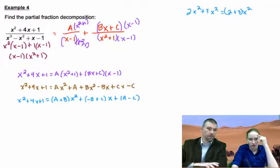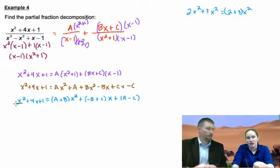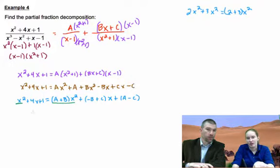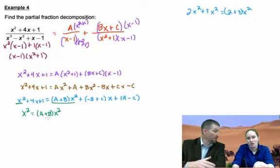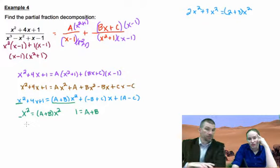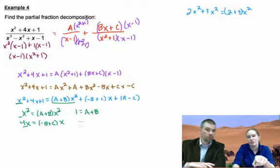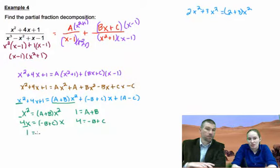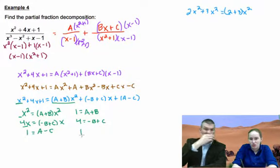Now this is kind of the tricky part to understand. In order for this to be a true equality, that means that x squared has to equal A plus B times x squared. In other words, A plus B has to equal 1 - has to equal the coefficient of this. So 1 equals A plus B. Same thing now for the 4x part. 4x has to equal negative B plus C times x, which means 4 has to equal negative B plus C. And then 1 has to equal just our number now, which actually we don't have to change that at all. So 1 equals A minus C.